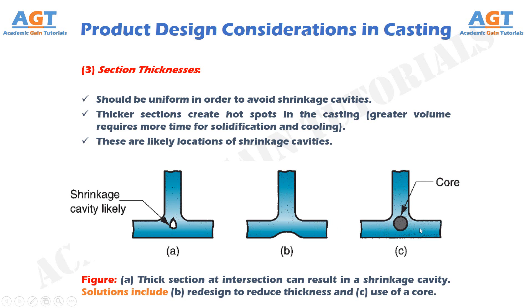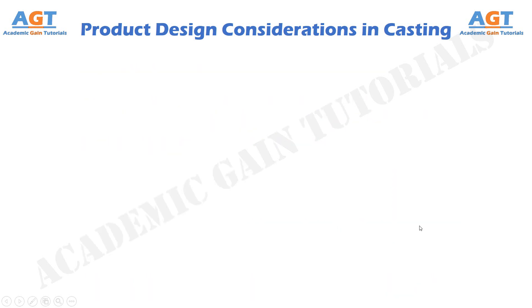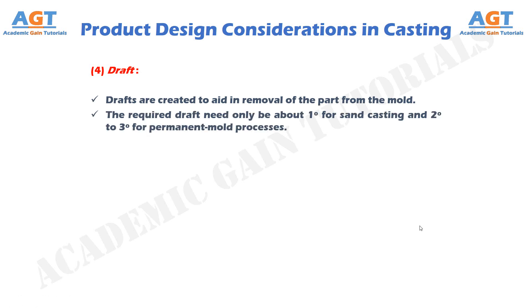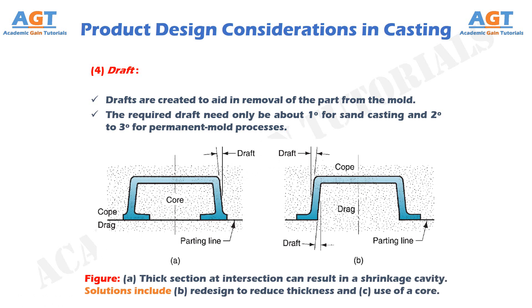Number 4: Draft. Drafts are created to aid in removal of the part from the mold. The required draft need only be about 1 degree for sand casting, and 2 to 3 degrees for permanent mold processes.